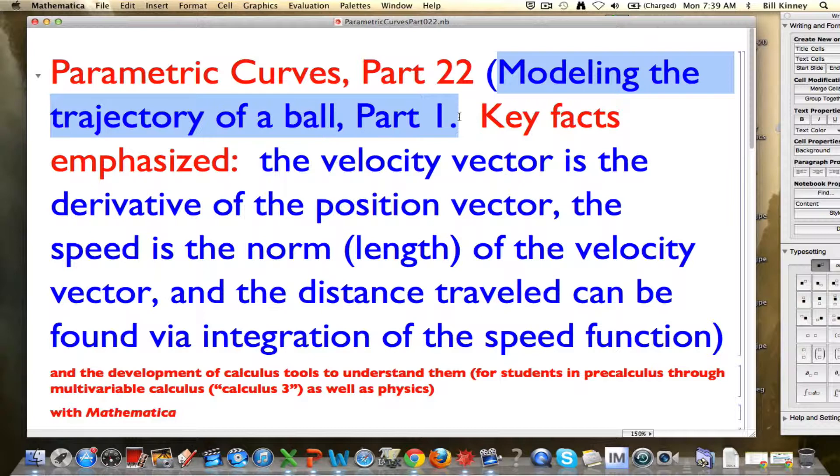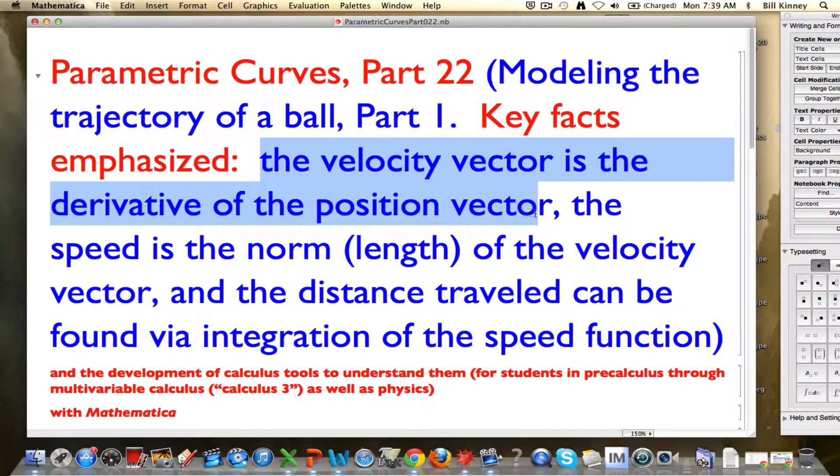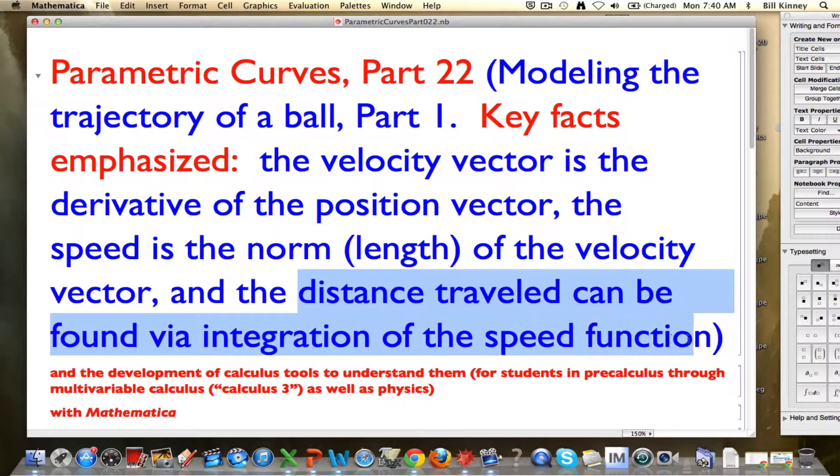I'm calling this Modeling the Trajectory of a Ball Part 1. I'm going to continue to emphasize the key facts from calculus. The velocity vector is the derivative of the position vector. The speed of the motion is the length of the velocity vector, and all these things are functions of time. And the distance traveled can be found via integration of the speed function.